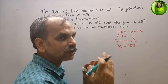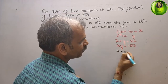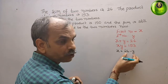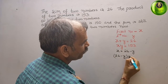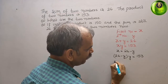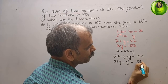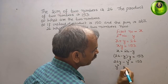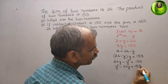We will substitute one variable into the second equation. From the first equation, X is equal to 26 minus Y. Substituting this into the second equation, we get (26 minus Y) times Y is equal to 153. Multiplying, we get 26Y minus Y squared equals 153. Bringing everything to one side gives Y squared minus 26Y plus 153 equals 0.